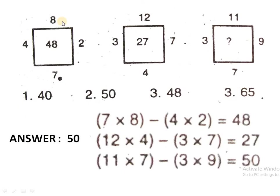Next pattern: multiply these two numbers and those two numbers, then subtract between the products. So 7 × 8 − 4 × 2 = 56 − 8 = 48. Similarly, 12 × 4 − 3 × 7 = 48 − 21 = 27. And 11 × 7 − 3 × 9 = 77 − 27 = 50. That is the solution method for this problem.